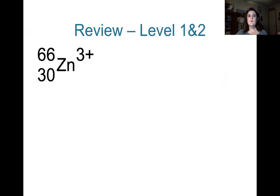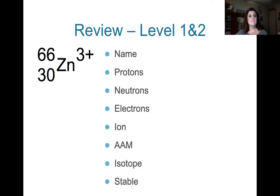So first let's review Level 1 and 2. If you're given this problem, it's in ion notation, and you have to find NPNEIAIS. So its name is Zinc. There are 30 protons, there are 36 neutrons, and there are 27 electrons. This is an ion because it has a charge. The AAM of Zinc is 65.39 or 65. So therefore this is an isotope. It is not stable.